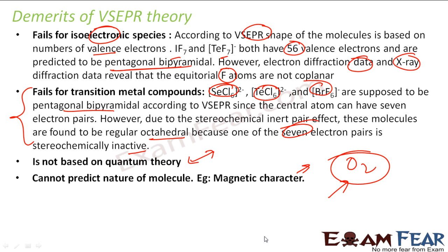For example, O2 has paramagnetic character, but VSEPR theory will not be able to predict the magnetic character of the molecule. But the good part is it can easily predict the shape of most molecules and is easy to use.